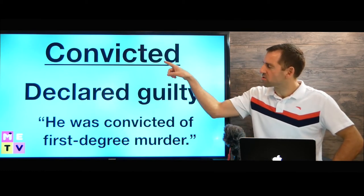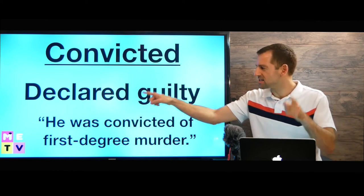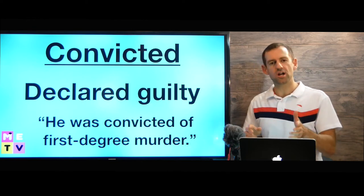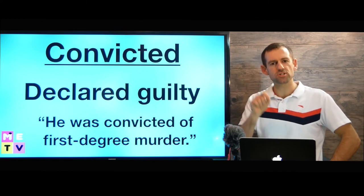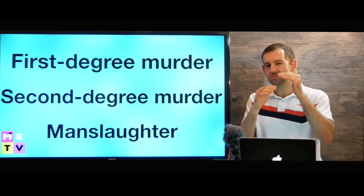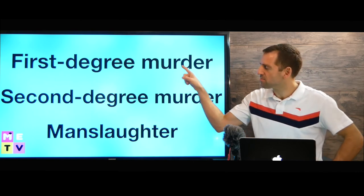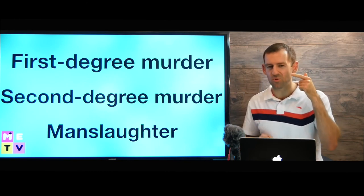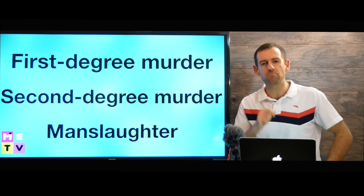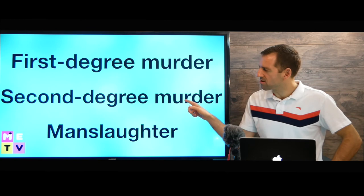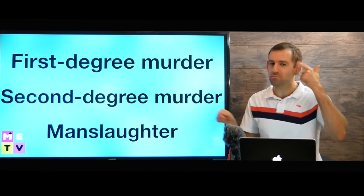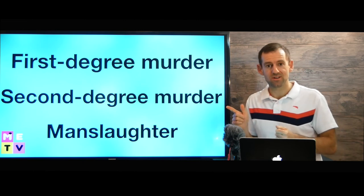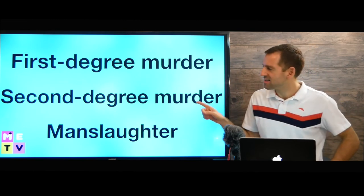Now I want to teach you a very important word: convicted. Convicted means declared guilty. He was convicted of first-degree murder — that means the judge said you are guilty of first-degree murder. Murder has different levels. First-degree murder is the worst — that means someone was planning to murder someone, then went and murdered them. Second-degree murder is also murder, but it's not planned — maybe someone just decided to kill someone but didn't plan it beforehand.